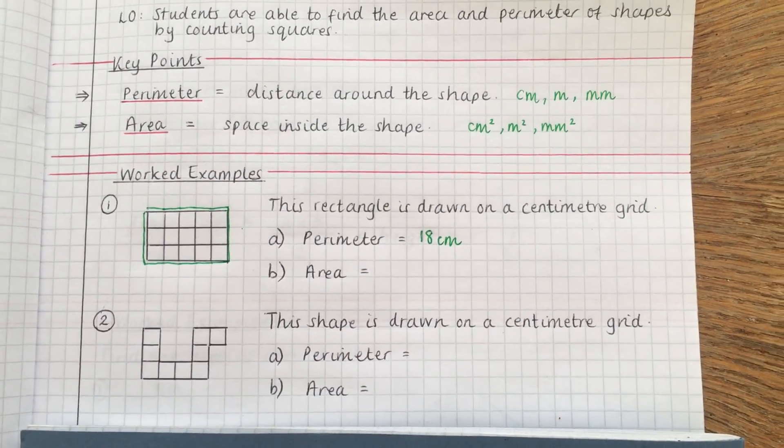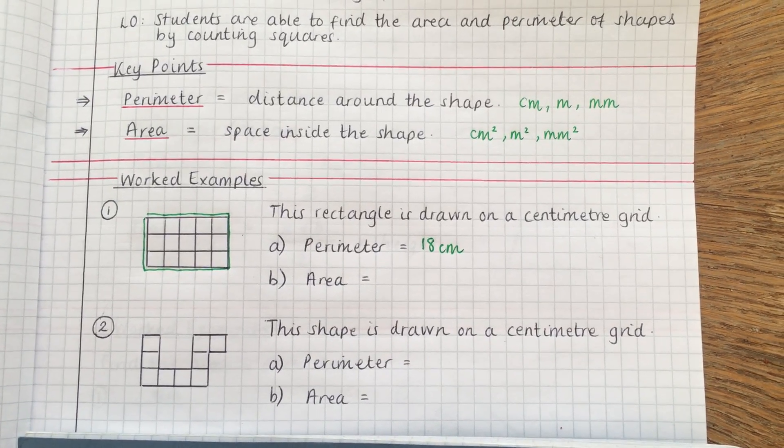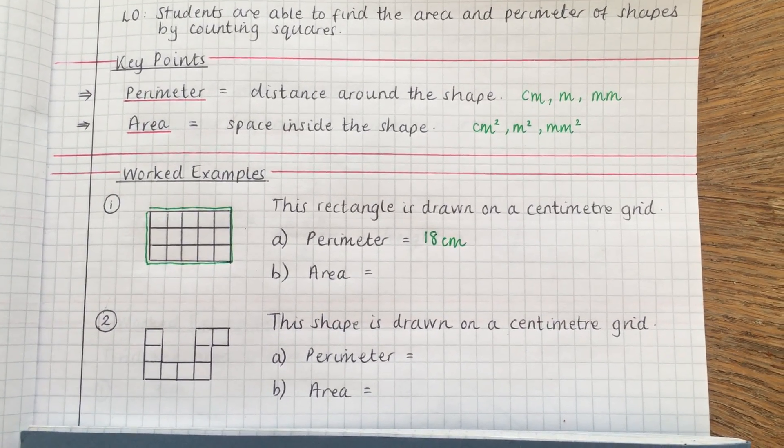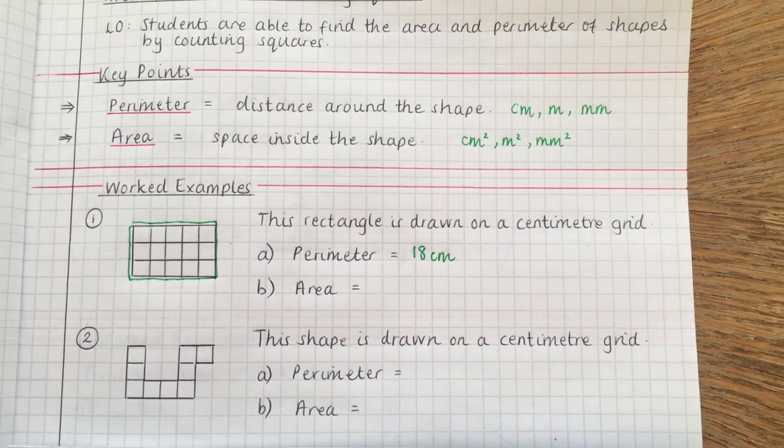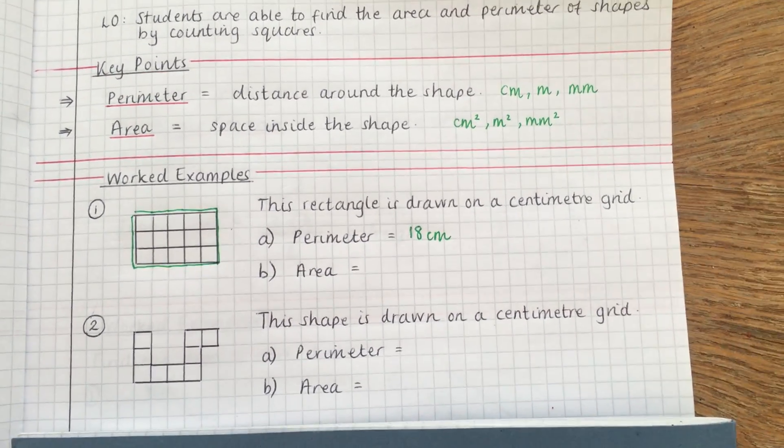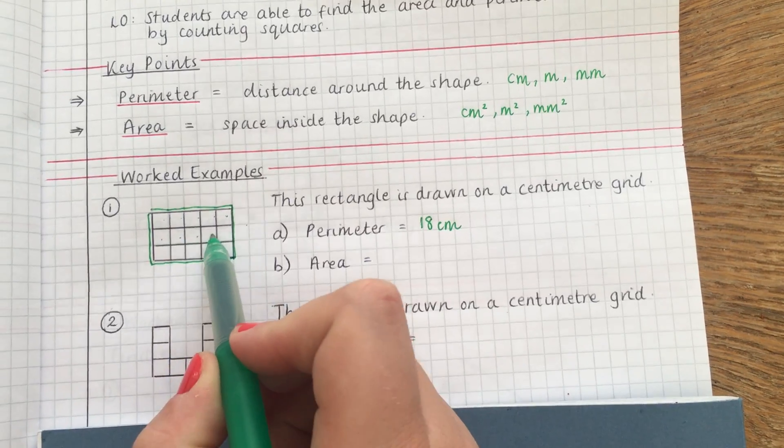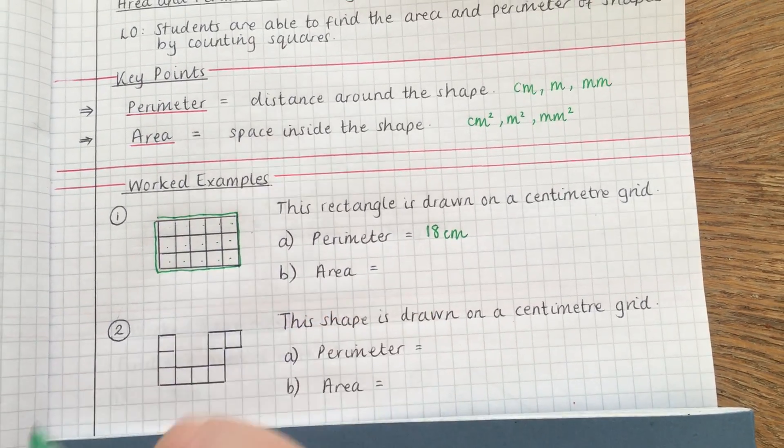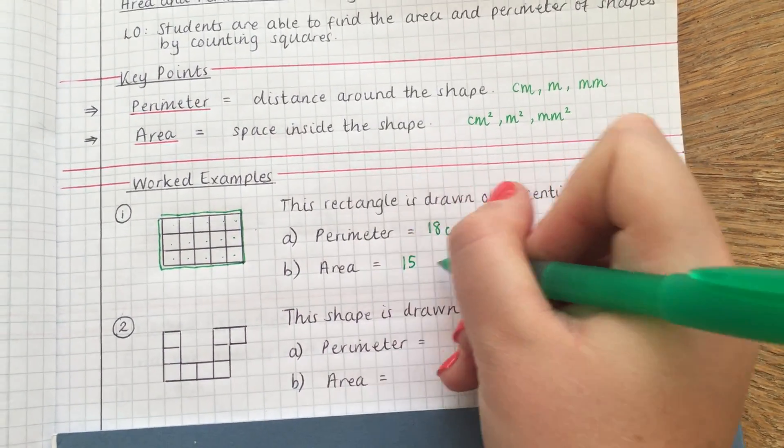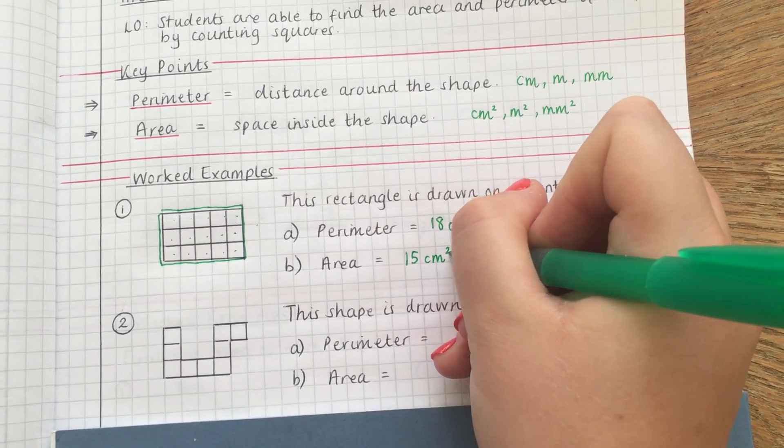Now your area is even easier to work out because it's just the space inside. When it's on a grid, all that means you have to do is count up how many boxes there are. So one, two, three, four, five, six, seven, eight, nine, ten, eleven, twelve, thirteen, fourteen, fifteen. So your area is fifteen, don't forget your units: centimeters squared.